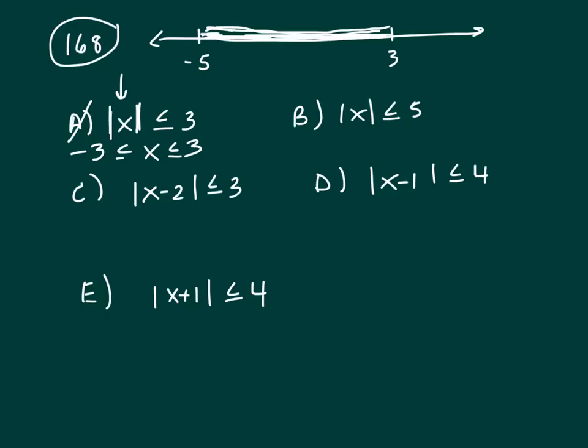So A doesn't work. B won't work either because that's going to be from negative 5 up to positive 5. Let's look at C. If x minus 2 is between 3 and negative 3, well, that's going to give me a 5 up here.